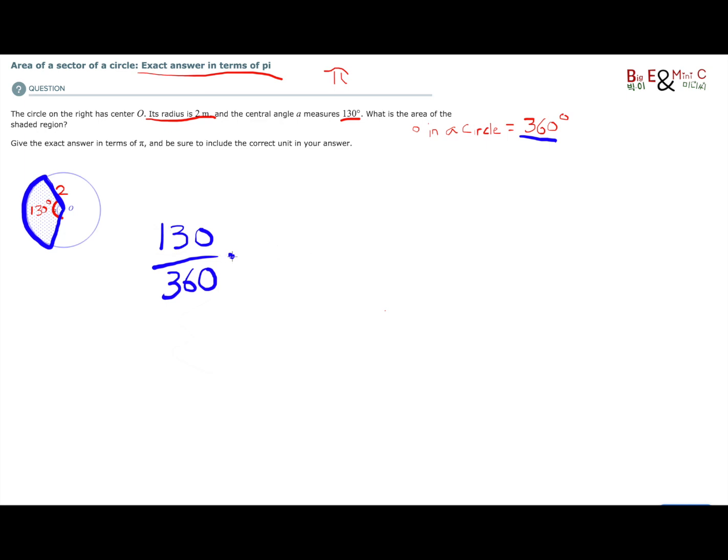Well, I need to then figure out what the area of the entire circle is. Well, the area of the entire circle, if you remember the formula, area of a circle is pi times the radius times itself, radius squared. So in this case, I'm going to take pi and I'm going to multiply that by radius squared, 2 squared.